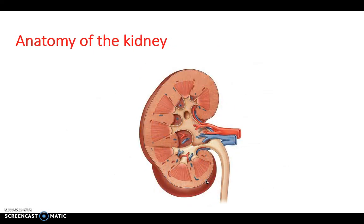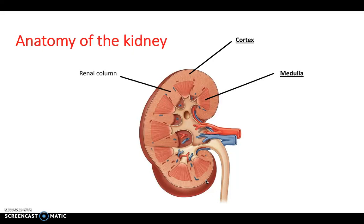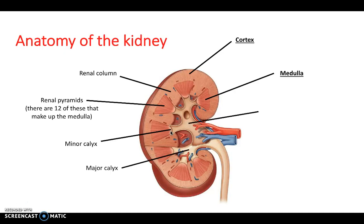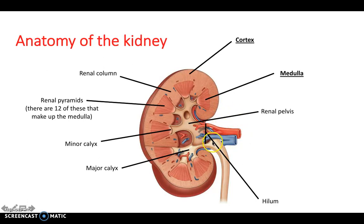Taking a cross-section of the kidney, it can be split into a cortex and a medulla. Between the pyramids we have the renal columns, and there are normally 12 renal pyramids making up the medulla. Urine drains into a minor calyx, then a major calyx, and then into the renal pelvis before going towards the ureters. The hilum is the point where vessels merge — the ureter, renal vein, and renal artery all emerge at the hilum.